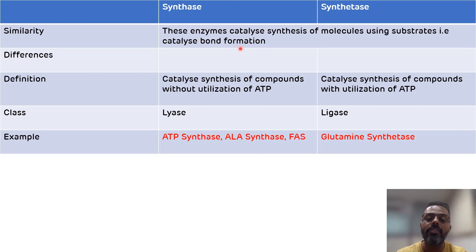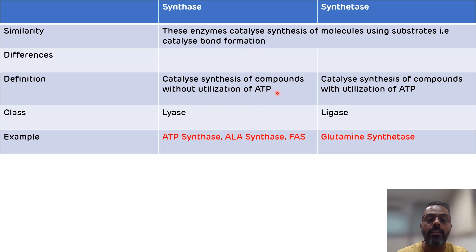Now we will see the differences between synthase and synthetase. The first and major difference is that synthase catalyzes the synthesis of compounds without utilization of ATP — there is no utilization of energy. While synthetase catalyzes the synthesis of compounds with utilization of ATP, meaning there will be utilization of energy.